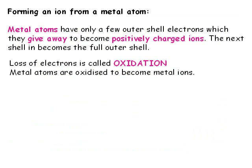Metal atoms lose electrons from their outer shell much more easily than non-metals, and will continue losing electrons until their outer shell is empty. The number of electrons they lose is the same as their valency, and this is also the amount of positive charge the newly formed ion has. We call this process of losing electrons oxidation. This use of the word oxidation has nothing to do with oxygen, and everything to do with electrons.